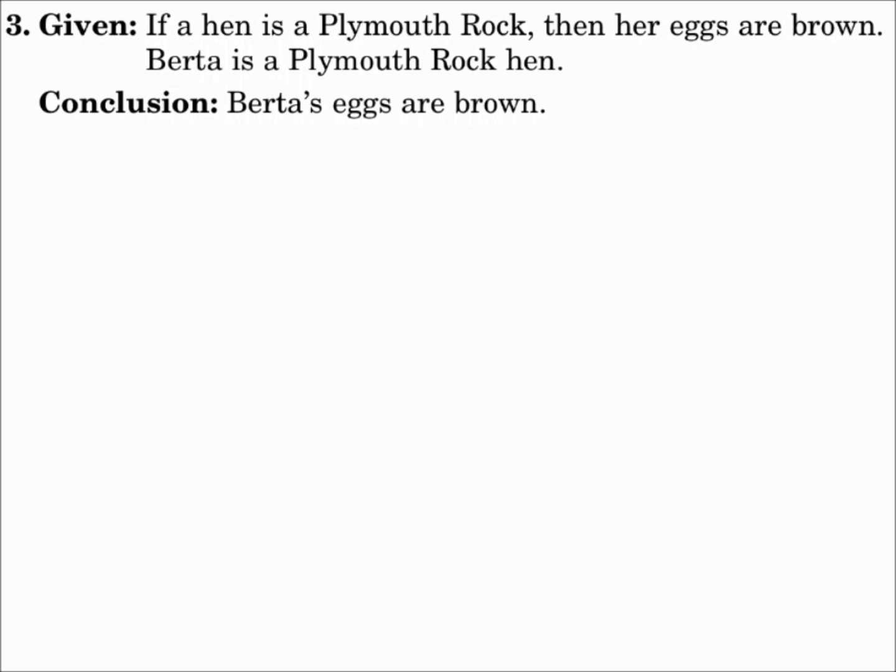Number 3. Given, if a hen is a Plymouth rock, then her eggs are brown. Berta is a Plymouth rock hen. The conclusion, Berta's eggs are brown.